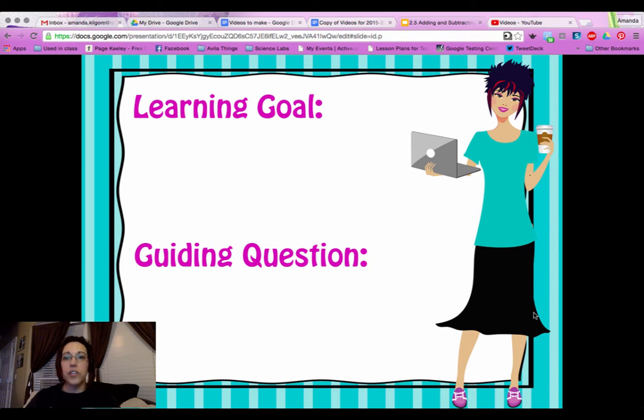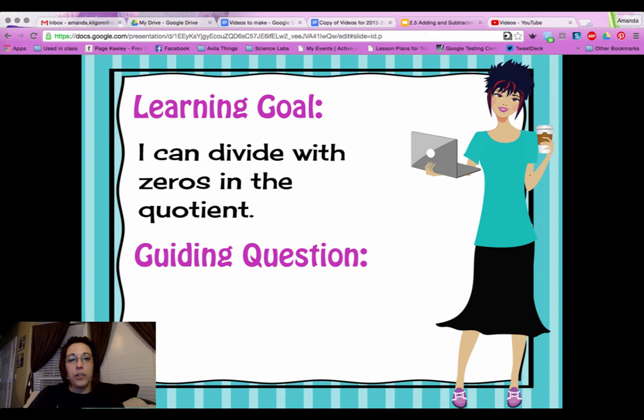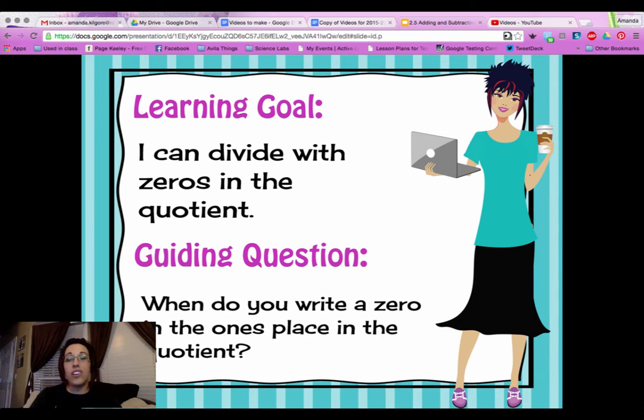Hi guys, this is Dr. Kilgore again with Dr. Kilgore's World with another flipped math video for your learning tonight. Our learning goal is I can divide with zeros in the quotient. Our guiding question is, when do you write a zero in the ones place in the quotient?